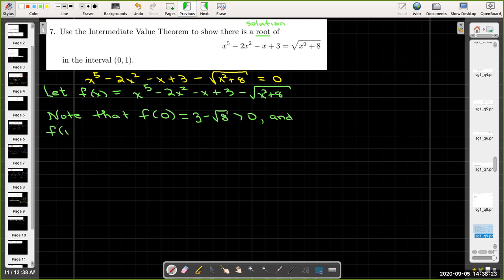Now f(1) is going to be 1 minus 2 minus 1 plus 3 minus radical 9. And so I'll have 3 minus 3 is 0, 1 minus 1 is 0. It's going to be negative 2.